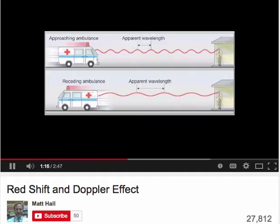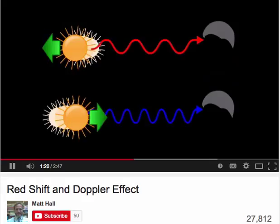The same thing can be seen with light waves, and particularly light waves produced by stars. For an observer, if a star was moving towards them, the light waves produced in front of the star would be compressed together, giving high frequency light waves. High frequency visible light is of a blue colour, so we call this blue shift.